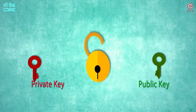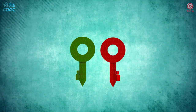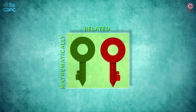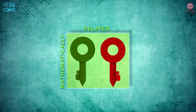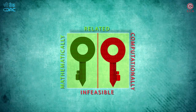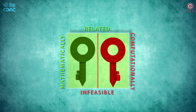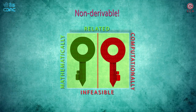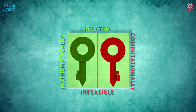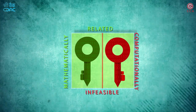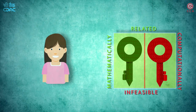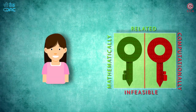Another important aspect of these keys is that though they are mathematically related to each other, it is computationally infeasible to deduce one of the keys from the other. That is, one may not be able to derive the private key by using the public key or the other way around. A key pair is issued to an individual and is used to uniquely identify that individual through the public key of that key pair.